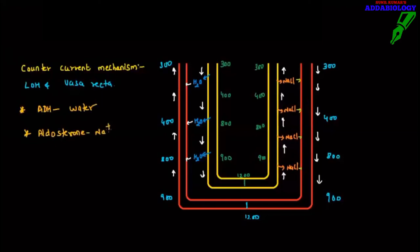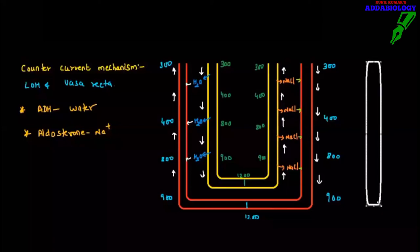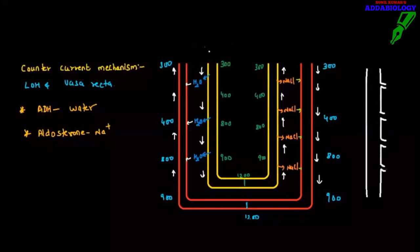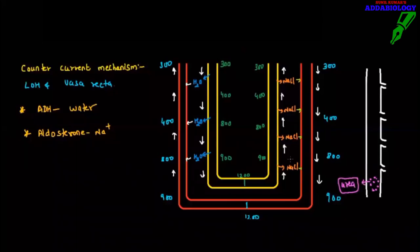ADH is responsible for absorption of water; aldosterone is responsible for absorption of Na⁺ ion. This is how the counter current mechanism is completed. The collecting tubule has a little bit of permeability — as a result, urea from the collecting tubule escapes, which was supposed to be lost in urine, but due to its small molecular size it escapes and directly enters the loop of Henle — it does not go into the vasa recta.